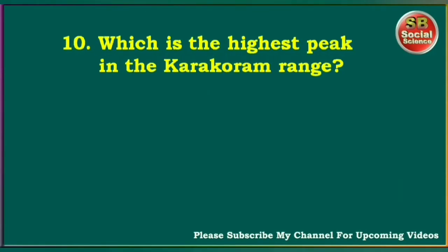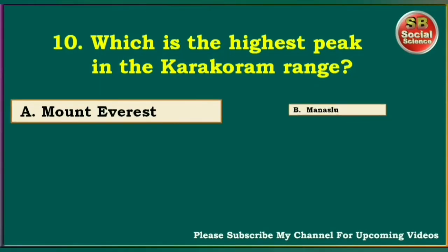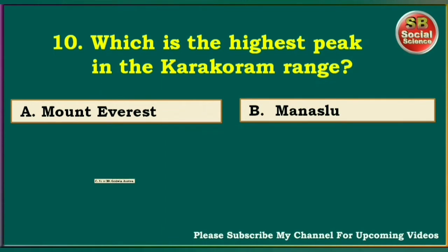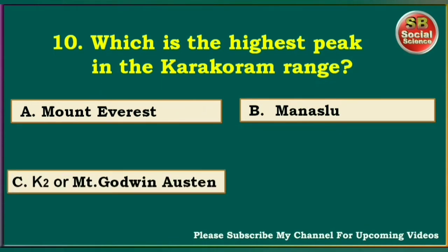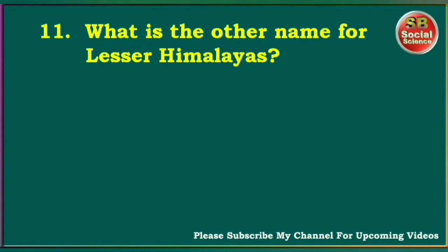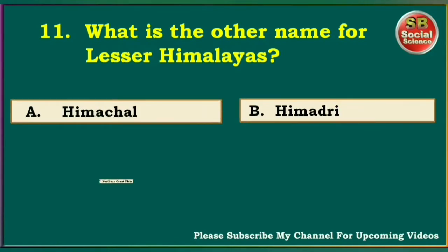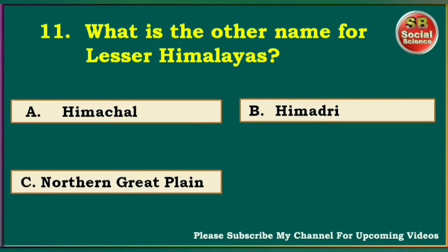Which is the highest peak in the Karakoram range? Mount Everest, Manaslu, K2 or Mount Godwin-Austin, Kanchanjunga. The right answer is K2 or Mount Godwin-Austin. What is the other name for the Lesser Himalayas? Himachal, Himadri, Northern Great Plain, Himalaya. The right answer is Himachal.